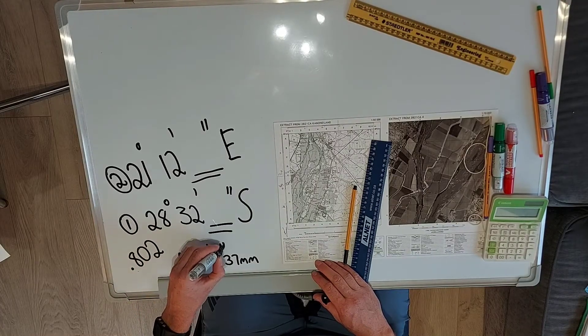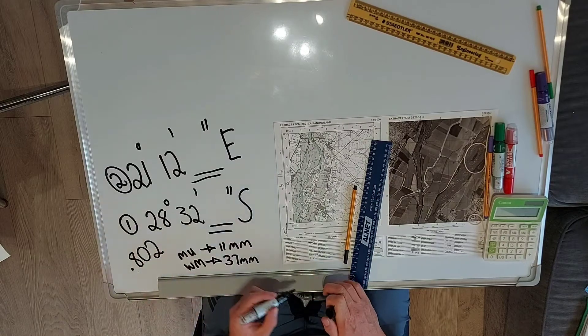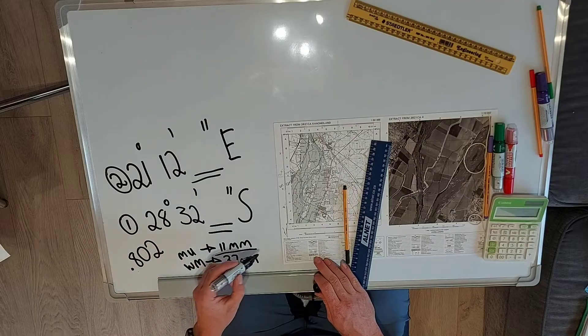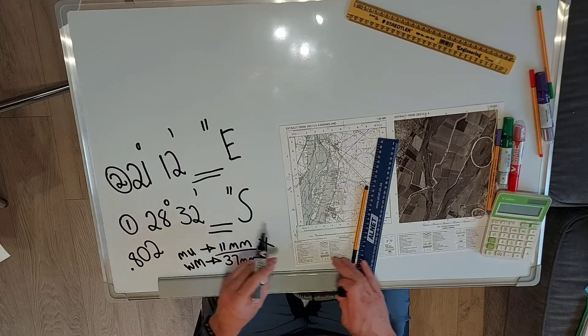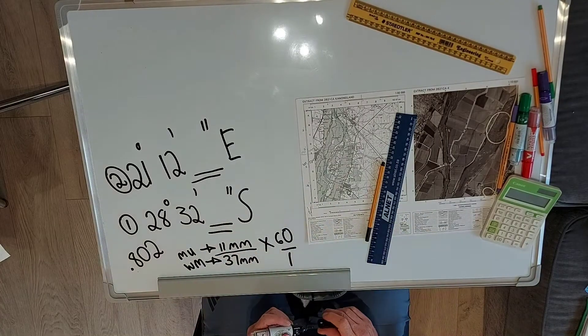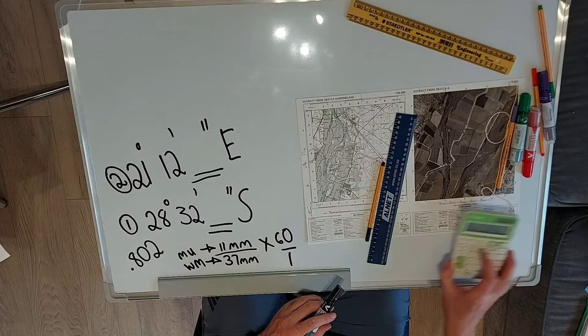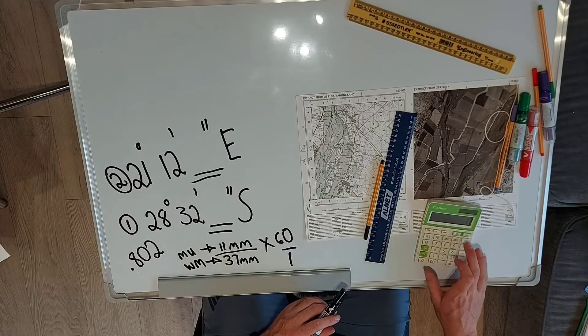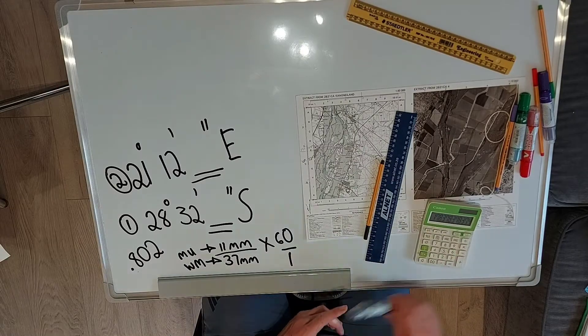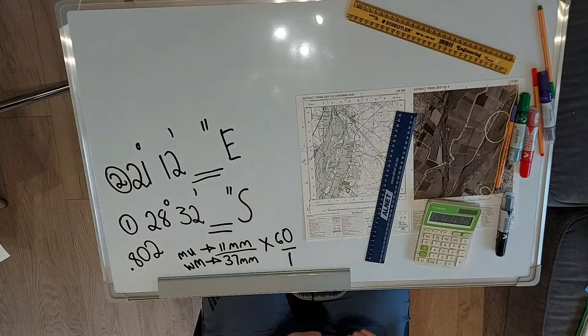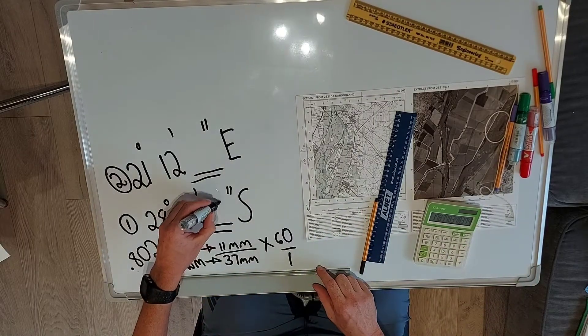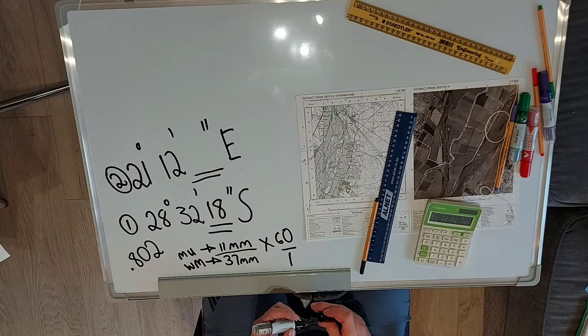So ultimately we can write at the bottom as well, the minutes used is 11 millimeters. So what you're going to do is you're going to take the 11 over the 37 times 60 over 1. Right, so if we do this calculation quickly, the answer is 17.83, and you can round that off, and the seconds would be 18 seconds south.